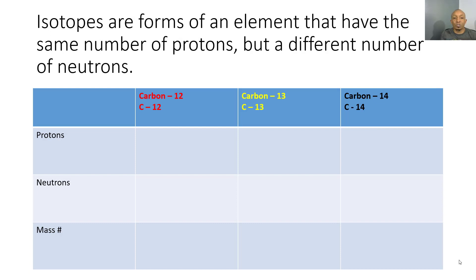For example, if we look at carbon-12, carbon-13, and carbon-14, we notice that the number behind each one of these is different. That's because each one of these has a different mass number.